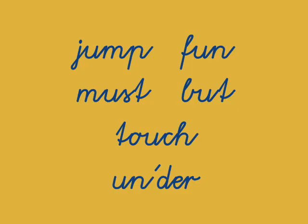Then we have the short U sound — the same symbol tells you that it's short. We say jump, fun, must, but, touch, under. We say the short U sound and not the long U. We don't say 'jūmp,' we say 'jump.' We don't say 'fūn,' we say 'fun.' And look at 'under' — I separated it because it has two syllables. Under. It's our first word that has two syllables.